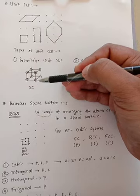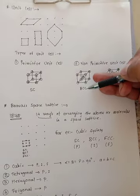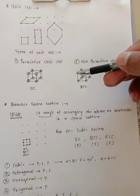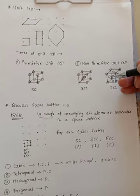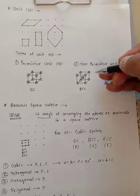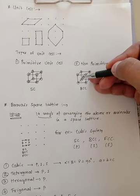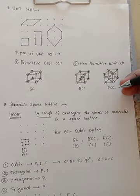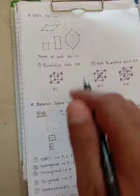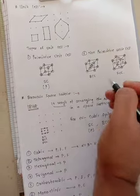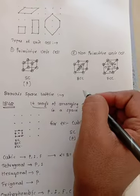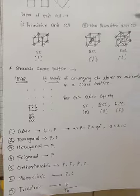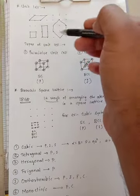Such unit cells are known as non-primitive unit cells. This unit cell is also known as simple cubic unit cell. This unit cell is known as body-centered cubic unit cell, and this is the face-centered cubic unit cell. In the face-centered cubic unit cell, atoms are present at the faces as well as at the corners of the unit cell. The simple cubic unit cell is represented by the symbol P, the body-centered unit cell is denoted by the symbol I, and the face-centered cubic is denoted by the symbol F.